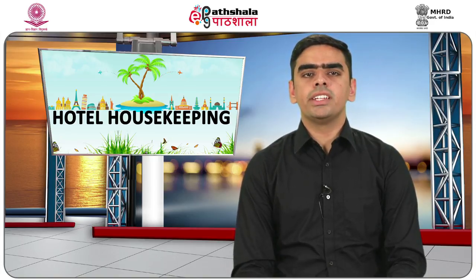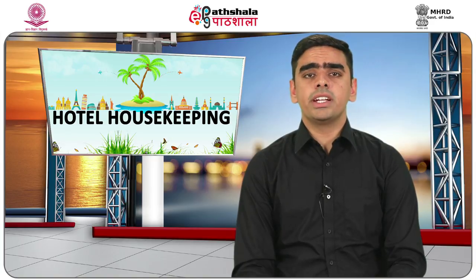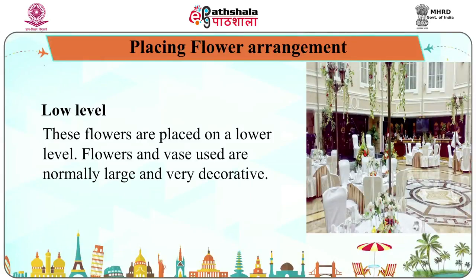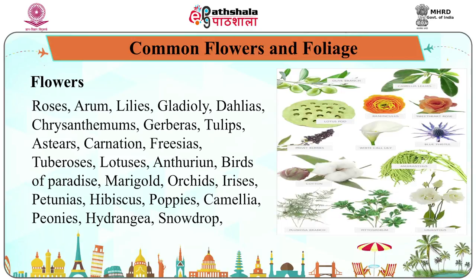Regarding placement of flower arrangements: placing at eye level means arrangements are placed at heights from 18 inches to 4 feet; television tops, alcoves, and pedestals can be used. Placing at high level means anything placed above eye level, where long flowers should be used. Placing at low level means flowers placed at a lower level using normally large and very decorative flowers and vases. Some common examples of flowers used include roses, arum, lilies, gladioli, dahlias, chrysanthemums, gerberas, tulips, asters, carnation, freesias, tuberoses, lotuses, and anthuriums.